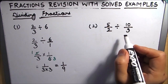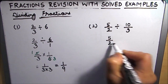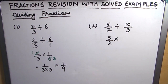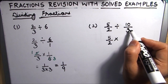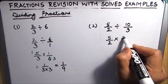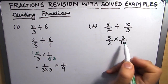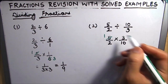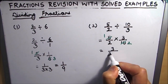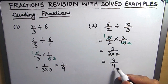The next example is 5 over 2 divided by 10 over 3. We write 5 over 2 as is, change the division sign to multiplication, and take the reciprocal of 10 over 3, which is 3 over 10. Now 5 and 10 share a common factor of 5, so 5 becomes 1 and 10 becomes 2. This gives 3 over 2 times 2, which equals 3 over 4. So this is our final answer.